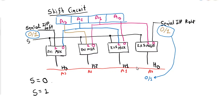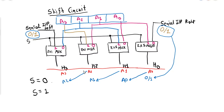When S equals zero, input zero of the subsequent multiplexers selects A0, A1, and A2 respectively. As a result, A0 is shifted one position to the left, A1 is shifted one position to the left, A2 is shifted one position to the left, and A3 is discarded. So when S equals zero, the operation performed is shift left.